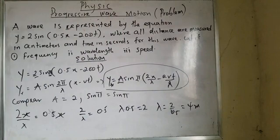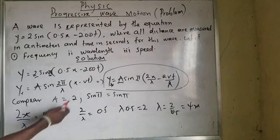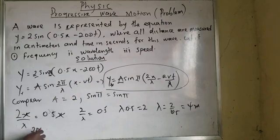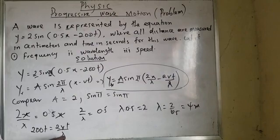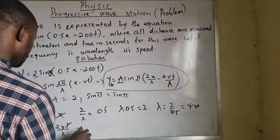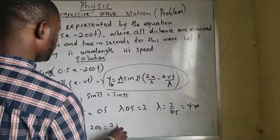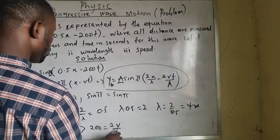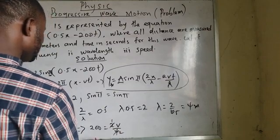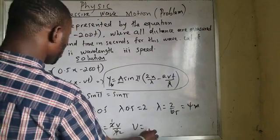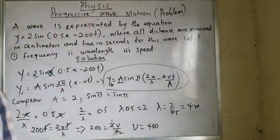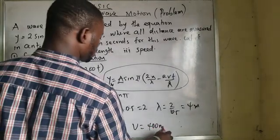Since I have that, I can now move on to the next part. Relating the minus terms, I have 200t equals 2vC divided by lambda. We cancel t. My lambda is 4. Which implies 200 equals 2vC divided by 4. It means my v would be equals to 400. 400 meters per second. That is my v.